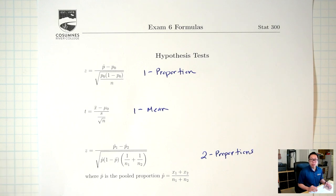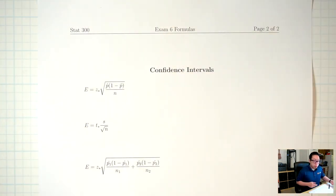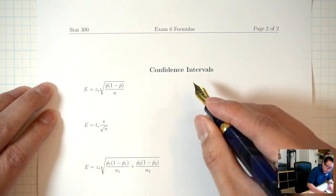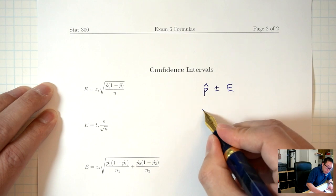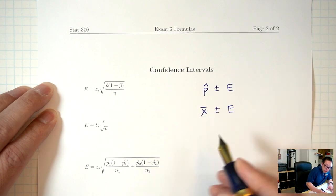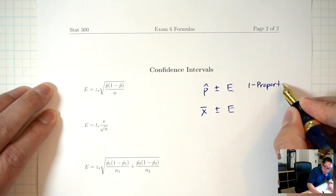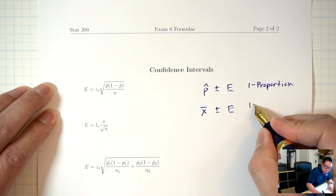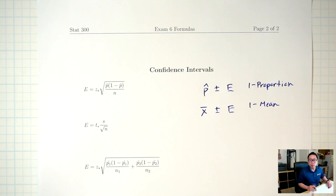This is the same formula sheet that we used in the last lecture. The front page we talked about in the last lecture — those are the formulas for hypothesis tests. Today, I want to talk about the second page, which are the formulas for confidence intervals. Back in Chapter 8, when we talked about confidence intervals, the end product looked like either p-hat plus or minus the margin of error, or x-bar plus or minus the margin of error. The first one was for the one proportion situation, the second for the one mean situation. Today we'll talk about the two proportions and the two means situation.